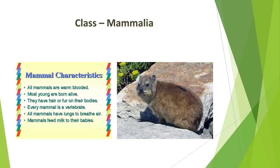Some of them have adapted to fly or live in water. The most unique mammalian characteristic is the presence of milk-producing glands, that is mammary glands, by which they feed their young ones. They have two pairs of limbs adapted for walking, running, climbing, burrowing, swimming, and flying.